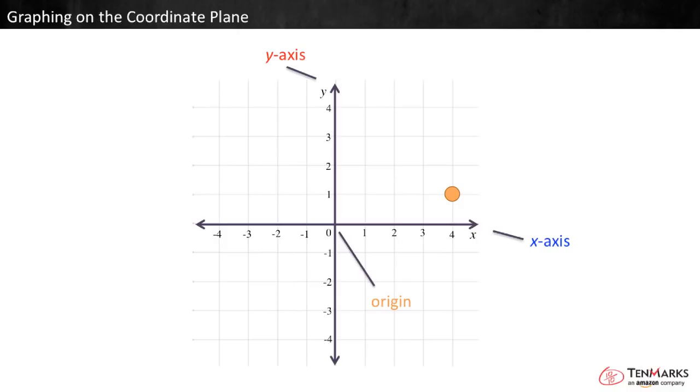Axes, origin, and labels, those are the parts of the coordinate plane. Let's see how mathematicians use it to describe locations.